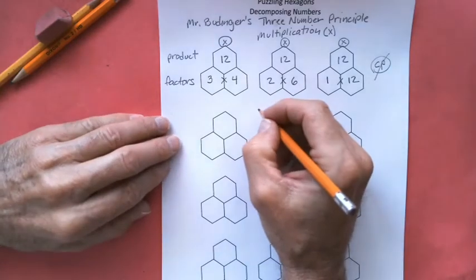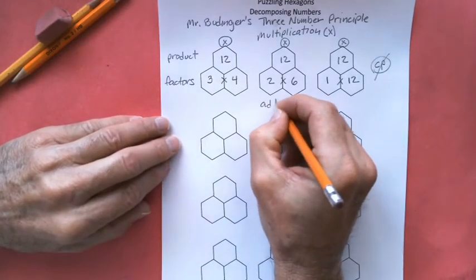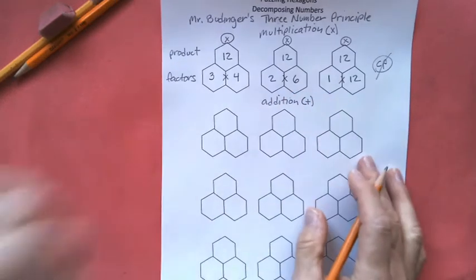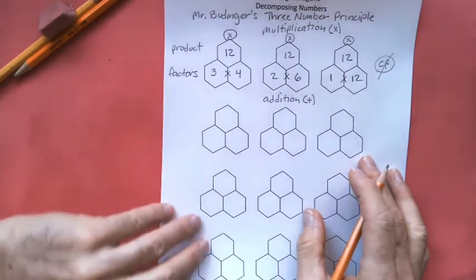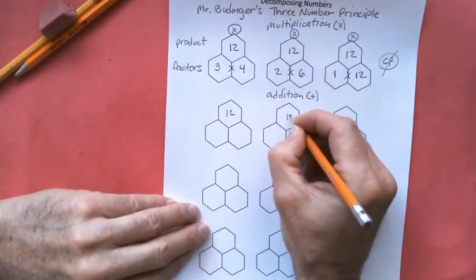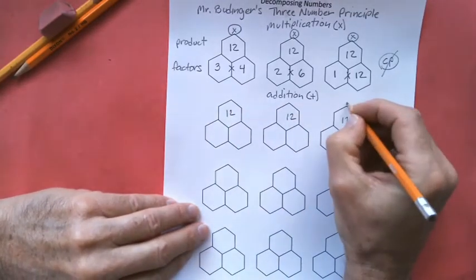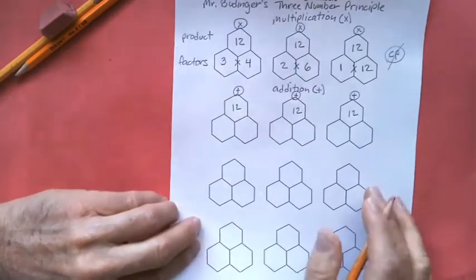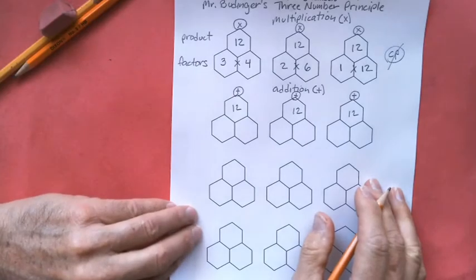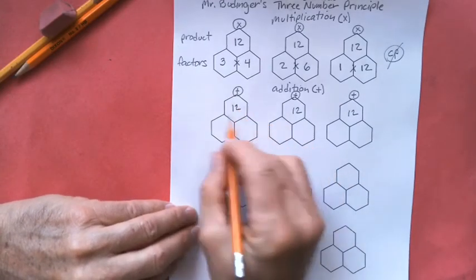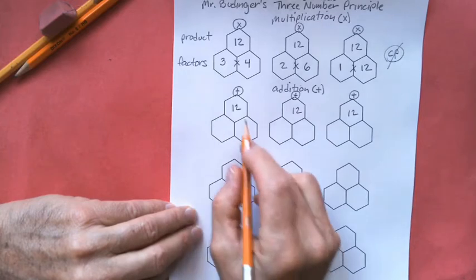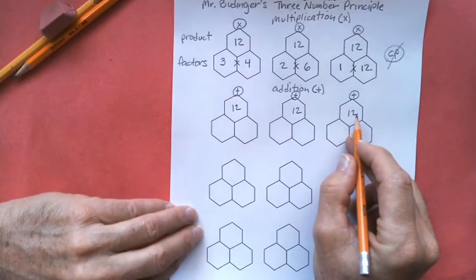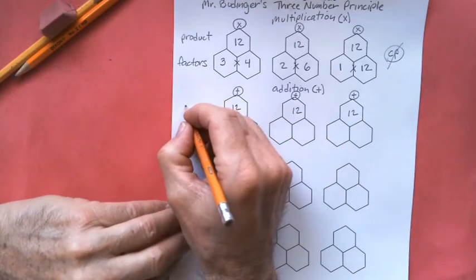Okay, let's do the addition. Let's use the same number 12. Let's put a little addition symbol up here just to remind you that this is addition. We're not using multiplication. And what do we call the number when we add these two numbers together? The one after the equal sign. Do you remember? We call that the sum.